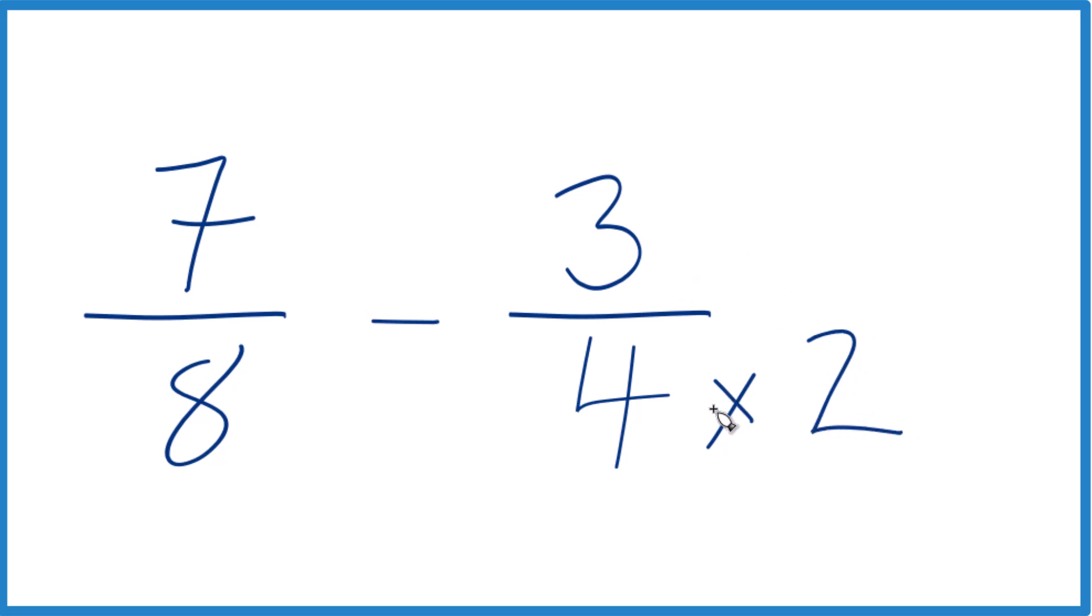But we can't just multiply the denominator by 2. We also need to multiply the numerator by 2. That's because 2 divided by 2, it's 1. So we're just multiplying 3 fourths by 1. It's still 3 fourths.